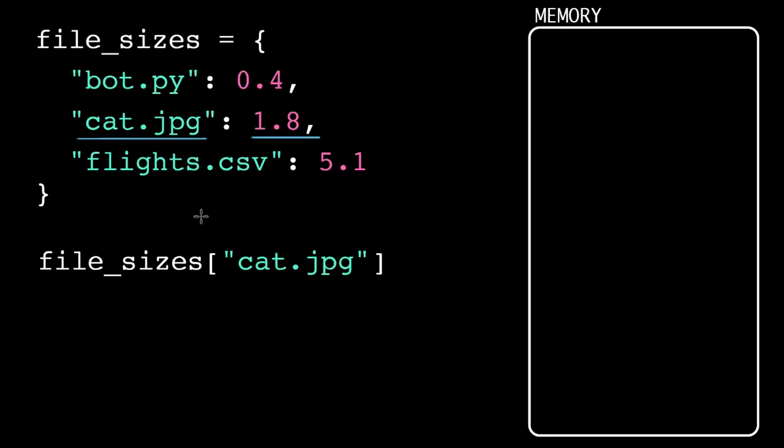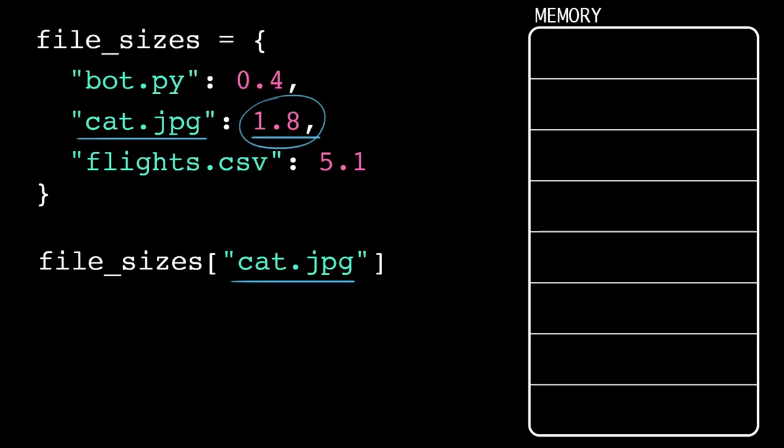With dictionaries, we know that we can look up a value using its key, but how does the computer represent that relationship? In memory, the computer just stores the key-value pairs in a list-like structure.